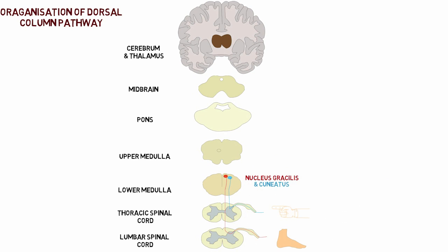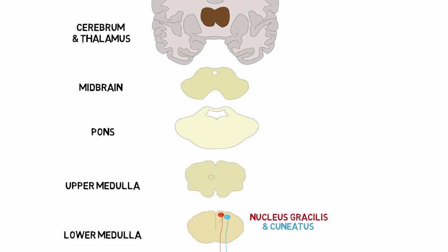In lower medulla we see two sensory nuclei, the nucleus gracilis and the nucleus cuneatus, in which these tracts relay. The nuclei give rise to second order neurons which cross to the opposite side of the medulla and travel upwards till the thalamus on the opposite side of the spinal cord.